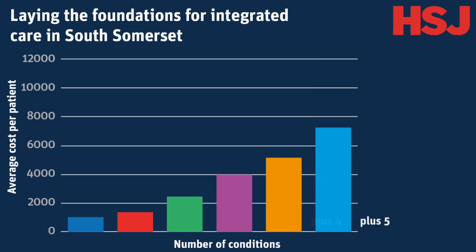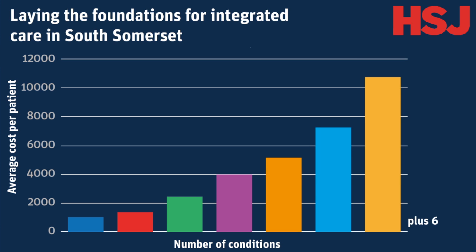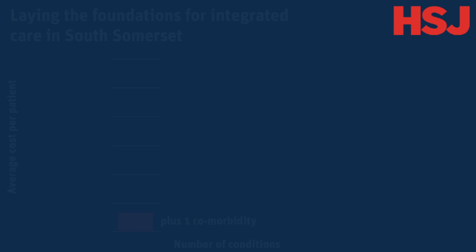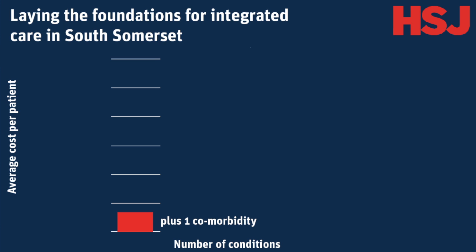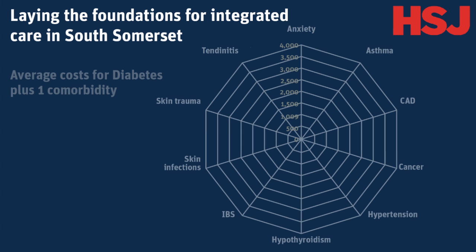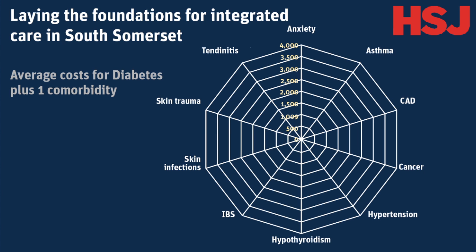As the graph shows, costs increase the more chronic conditions that people with diabetes have. The data allow us to explore the cost implications of diabetes combined with particular comorbidities. Returning to the 1,535 people with diabetes and one other condition, we can depict each of the most common of these conditions using a spider diagram, with each ray indicating a particular condition. For example, 845 people have diabetes and hypertension.